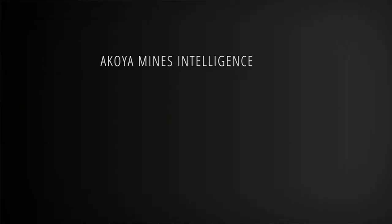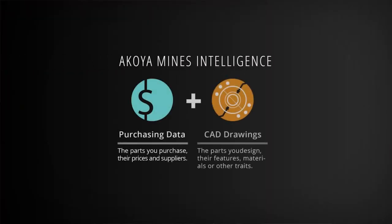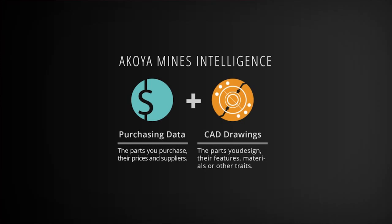Then we'll go into your ERP system and extract up to 30 different elements from your ERP system — who's the buyer, what's the annual volume of the part, what's the price of the part, who's the supplier. We'll merge those two sets of data together.